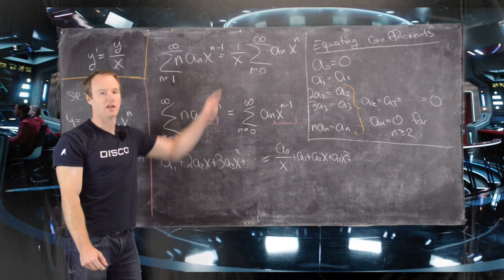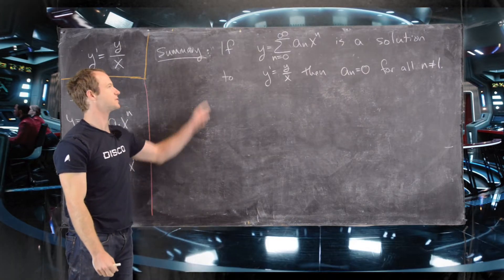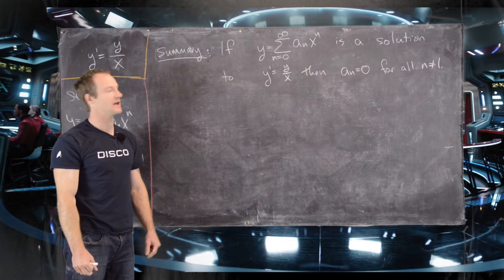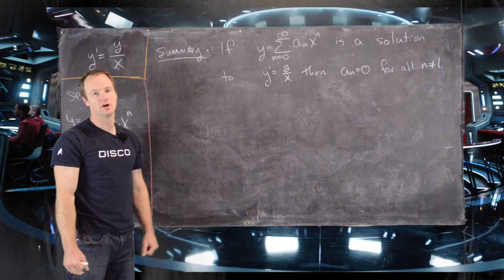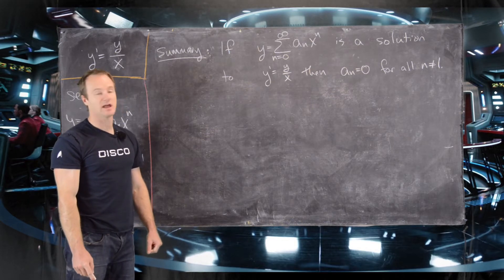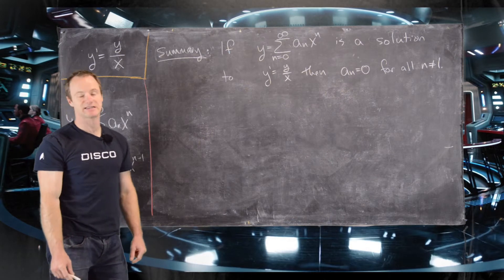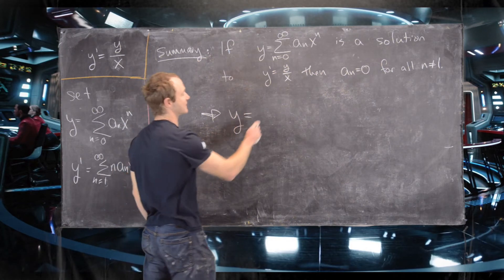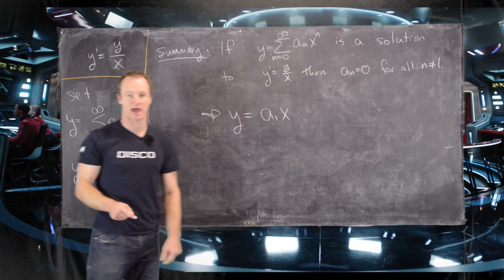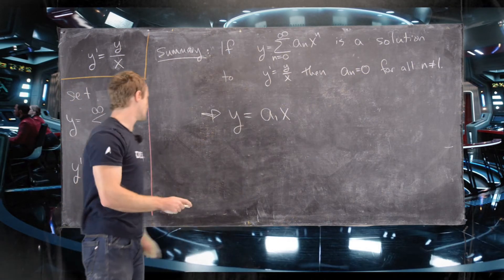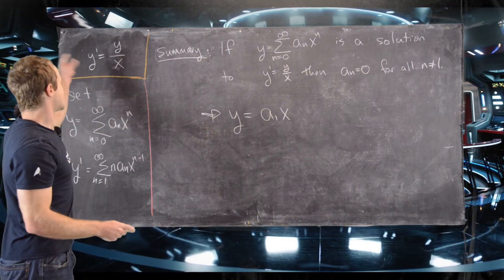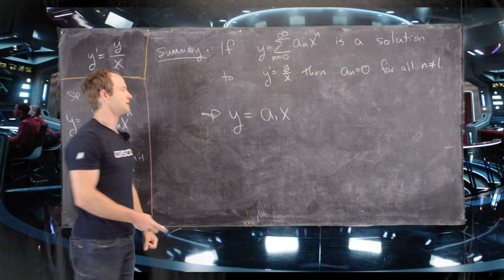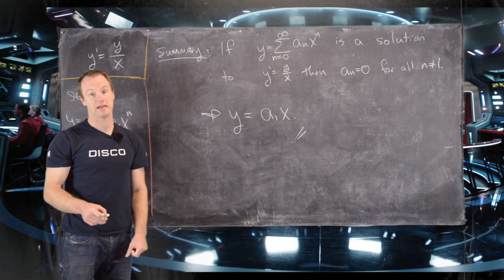So here is our solution summary. If the power series y equals the sum from n equals 0 to infinity of a sub n x to the n is a solution to y prime equals y over x, then all coefficients are zero except the n equals 1 coefficient. So y collapses to y equals a sub 1 times x. I'll let you verify the separable solution to this differential equation, and you'll see you get the same result. That is the end of this example.